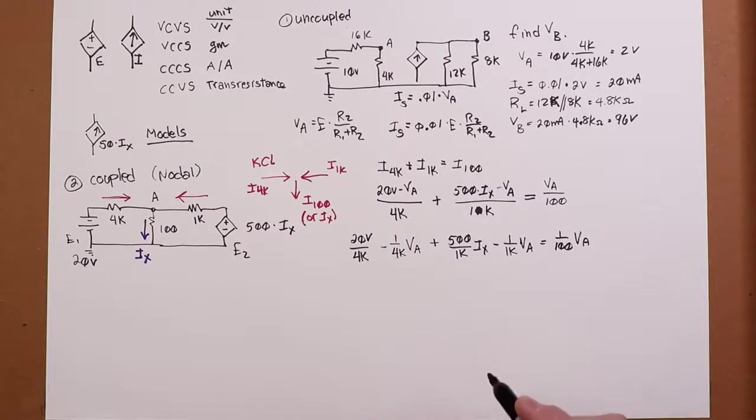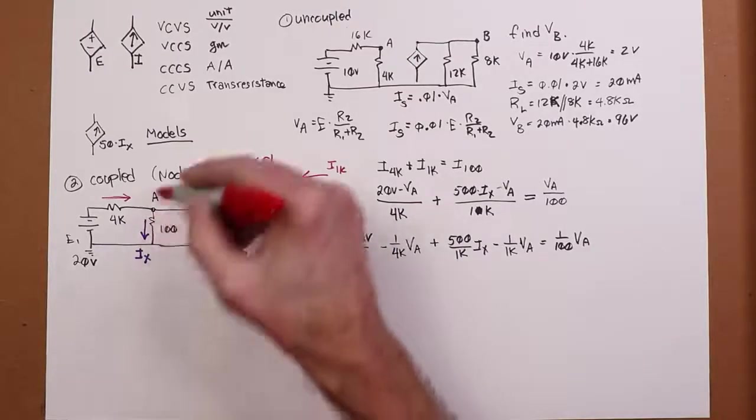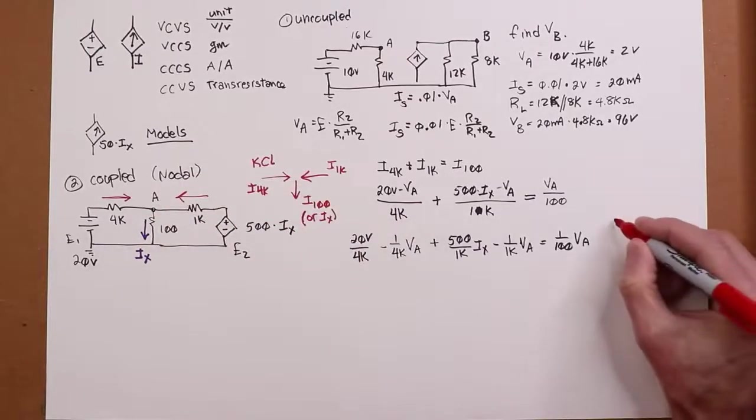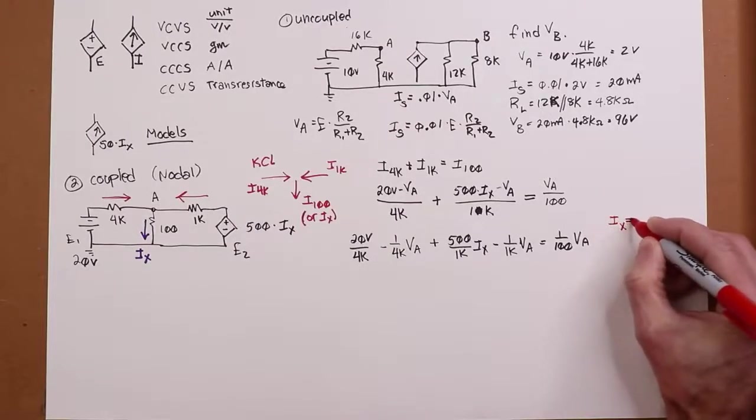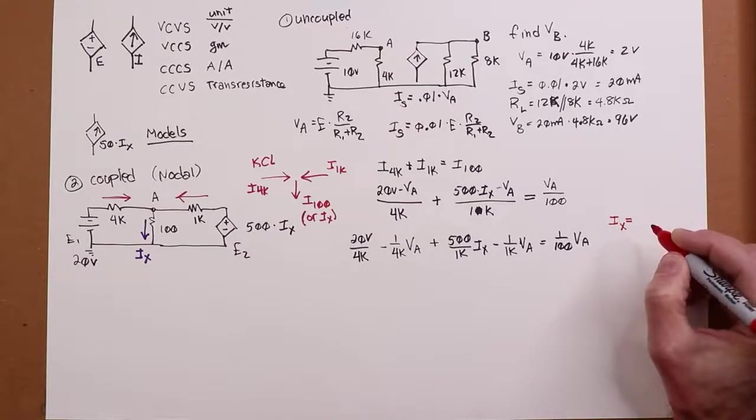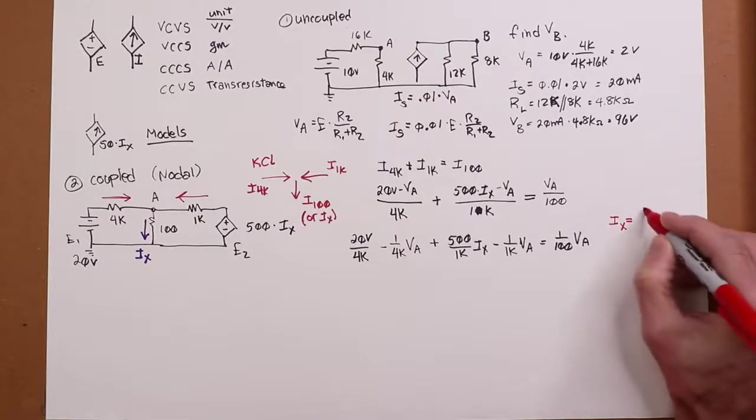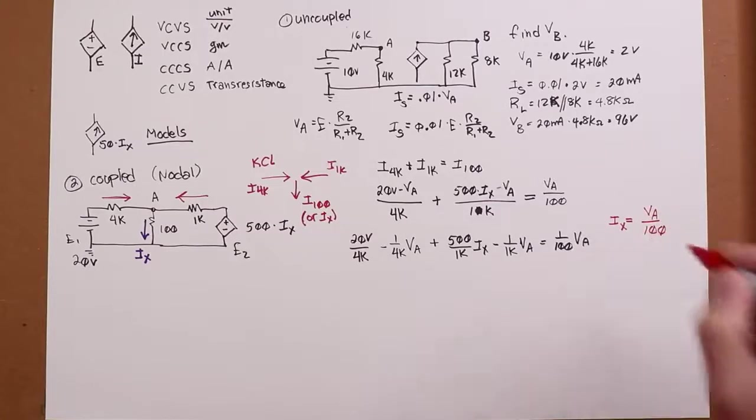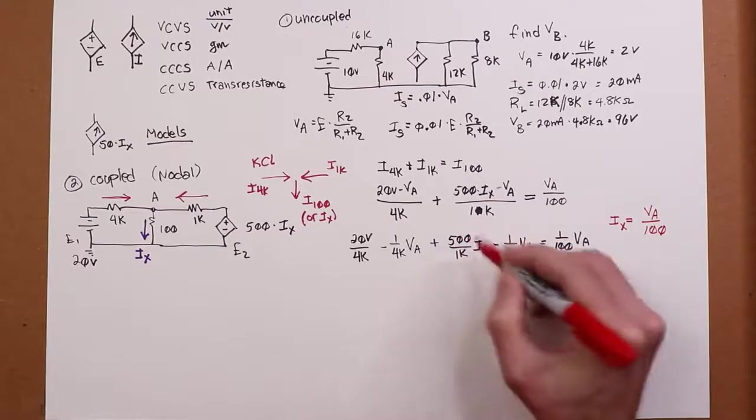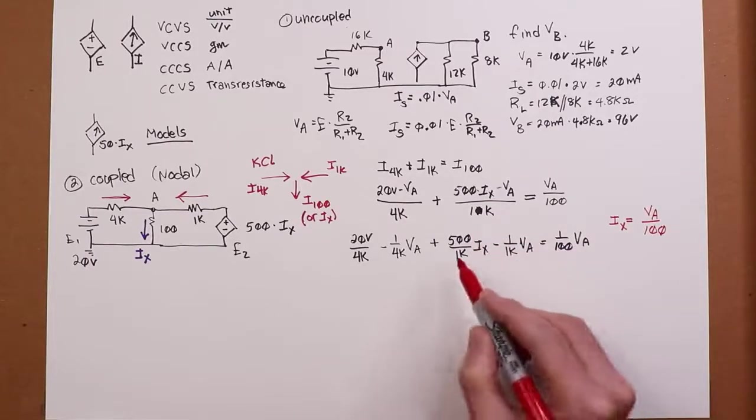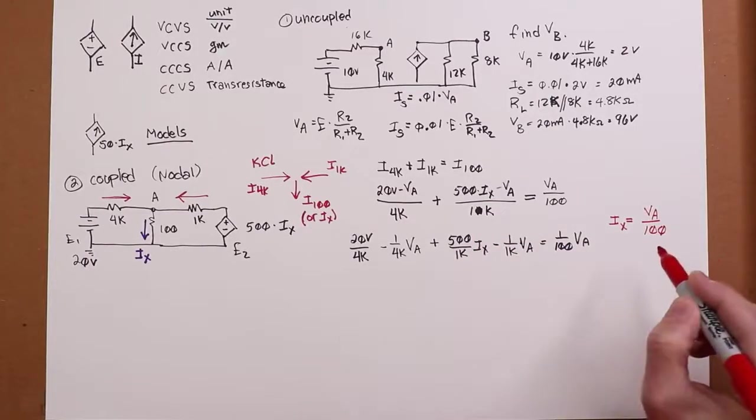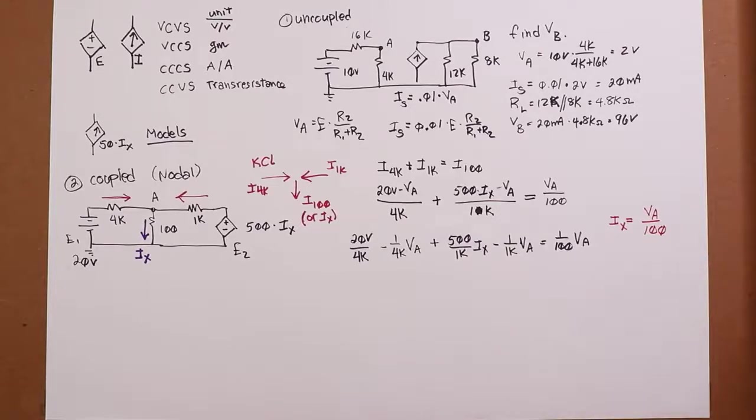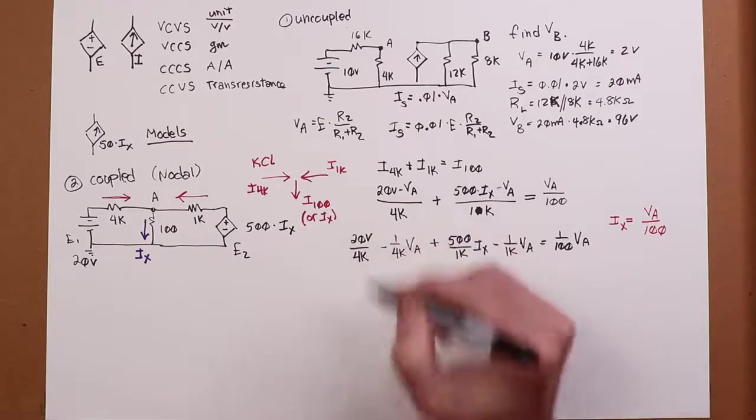All right. So, Ix. We know that Ix is I100. Let's not put this off here on the side. We know that Ix is I100. And what is I100? It's VA over 100. So, let me take that and substitute it in here. Now, remember, this is basically just 1 half Ix. So, what we end up with is 1 half times VA over 100. Well, what is that? That's 1 over 200 times VA.